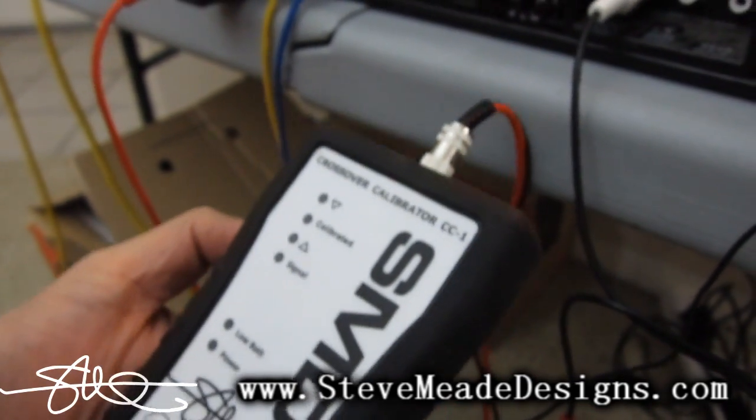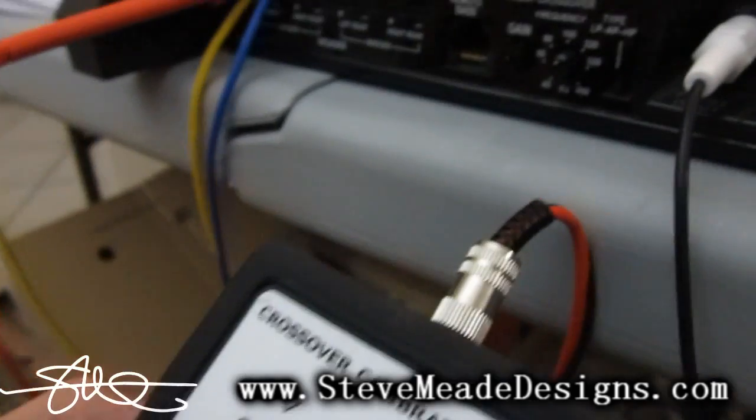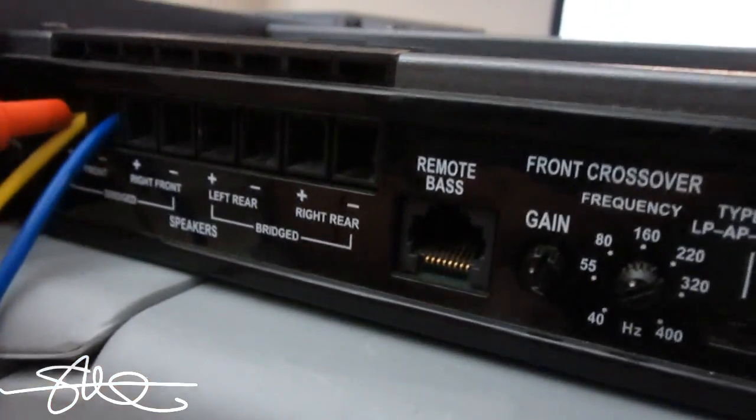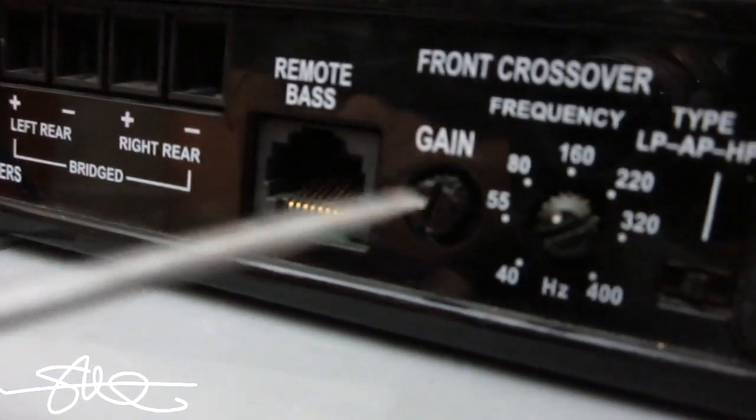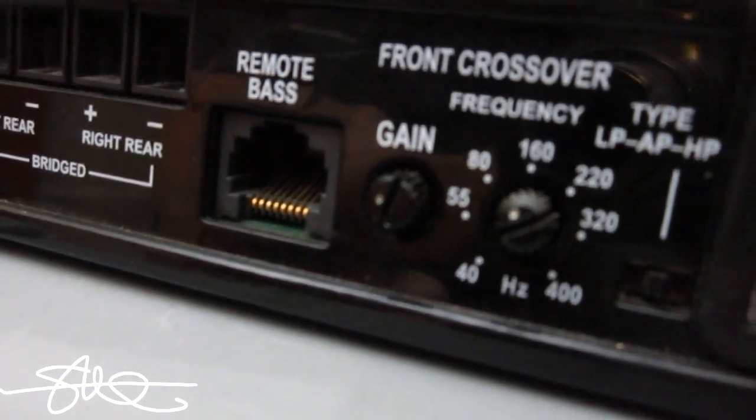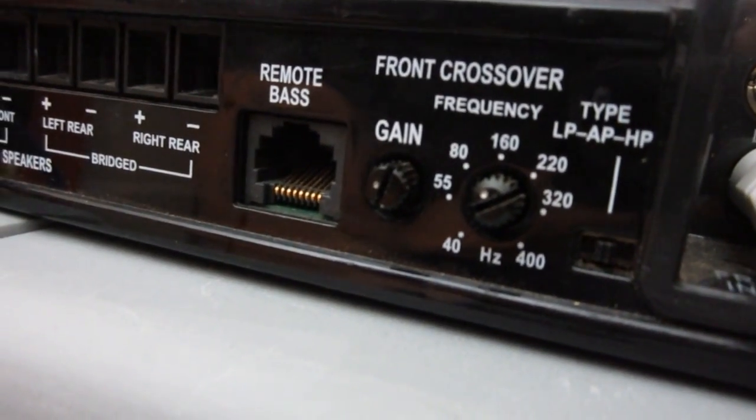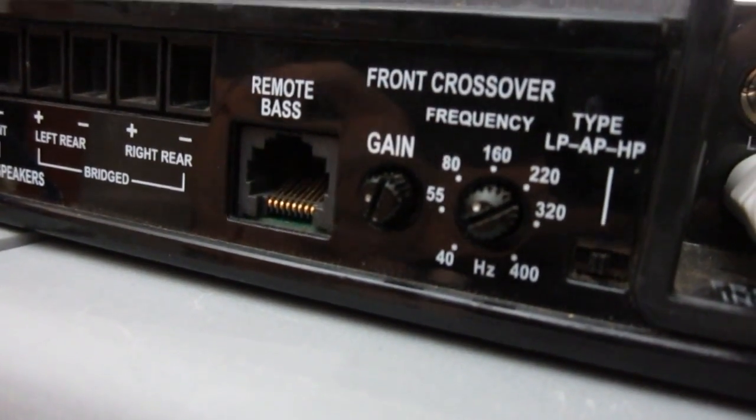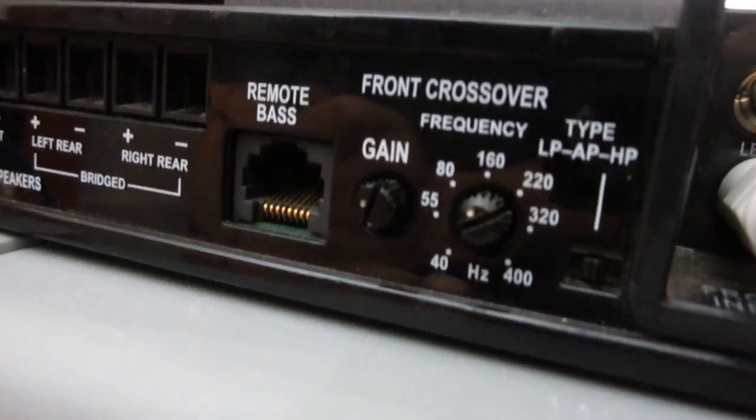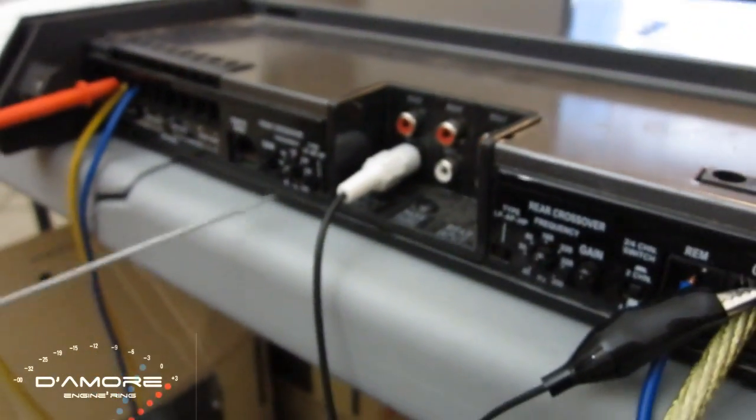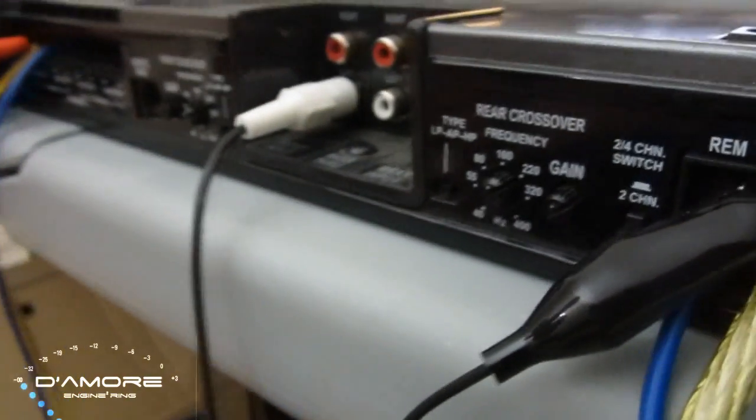The whole reason this exists is because if I want to set my crossover, let's say, at 112 Hz, I mean, look at this control here. I have 80 and then 160. I have no idea where 112 is. And this amplifier is actually a pretty good example of one that's fairly easy to do because it has a lot of markings and they're fairly accurate on this amplifier.